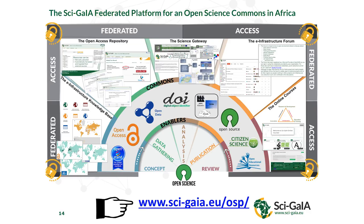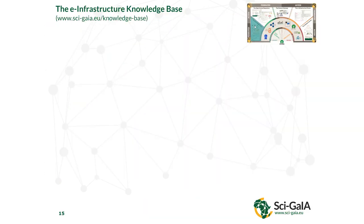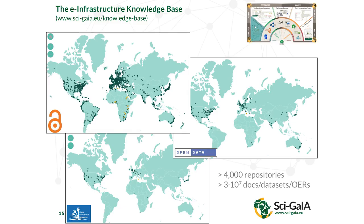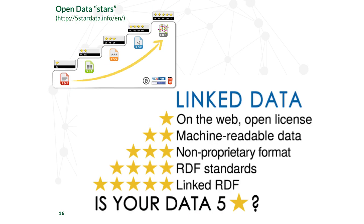We have an open science platform that is federated — meaning one set of credentials gives you access to all services on the map. We are promoting federated identity and federated credentials. The first element is the infrastructure knowledge base, a database containing more than 4,000 open access documents, data repositories, and open educational resource repositories containing more than 30 million datasets, documents, and OERs. We built a semantic search engine on top of this infrastructure so you can search for papers, discover datasets, find links between datasets or between datasets and papers, and then access the data.